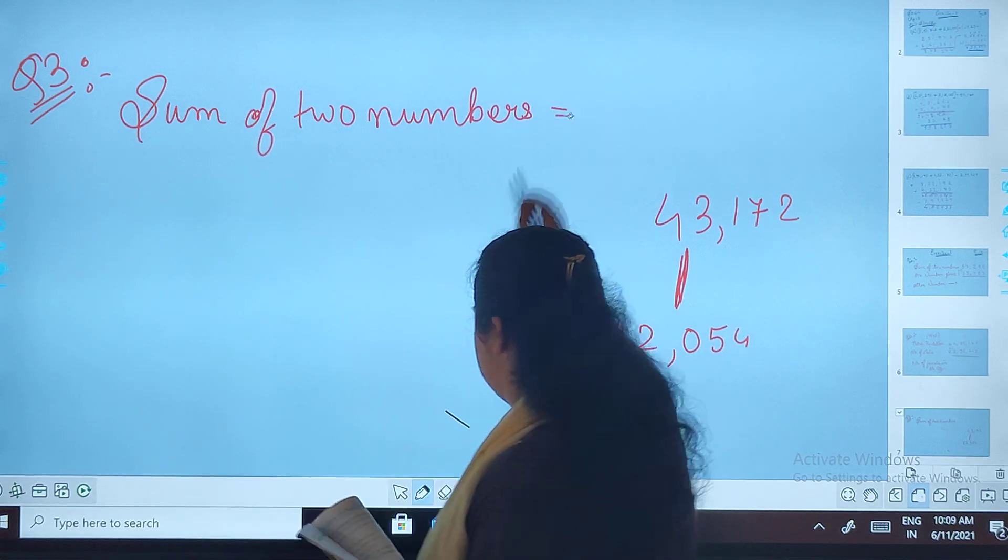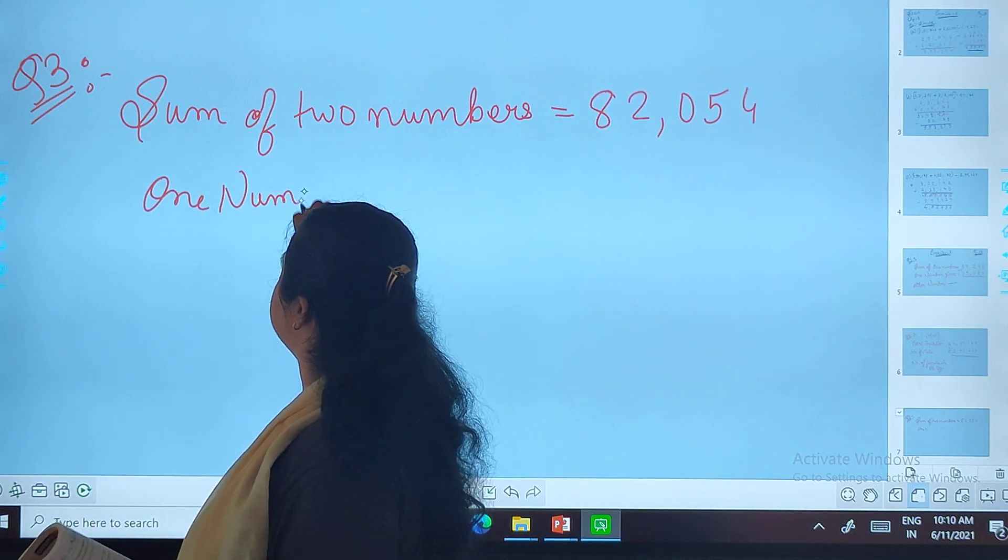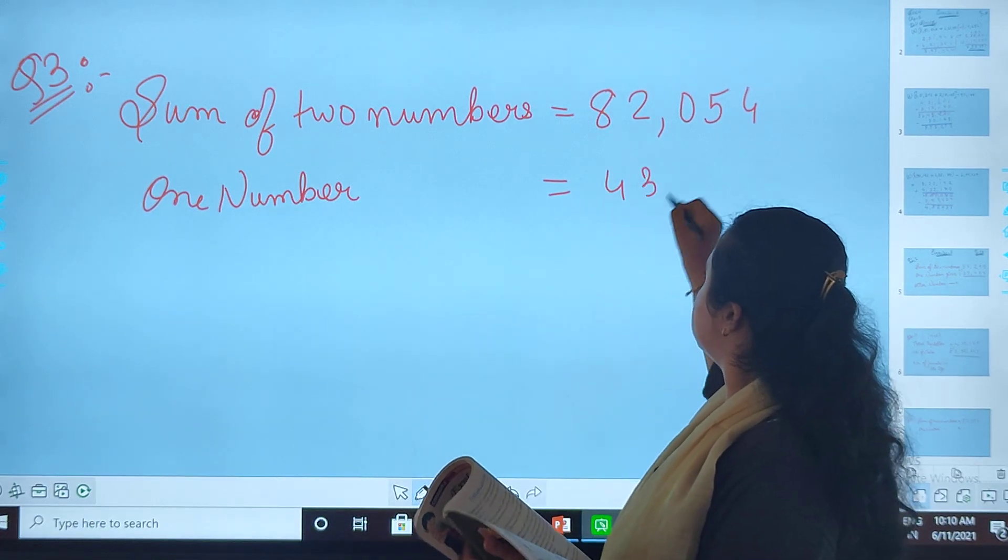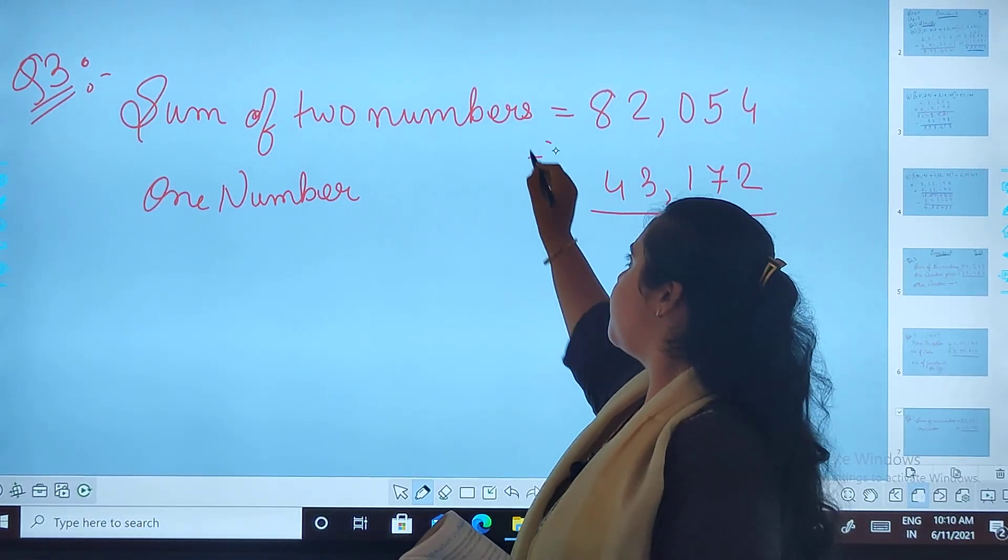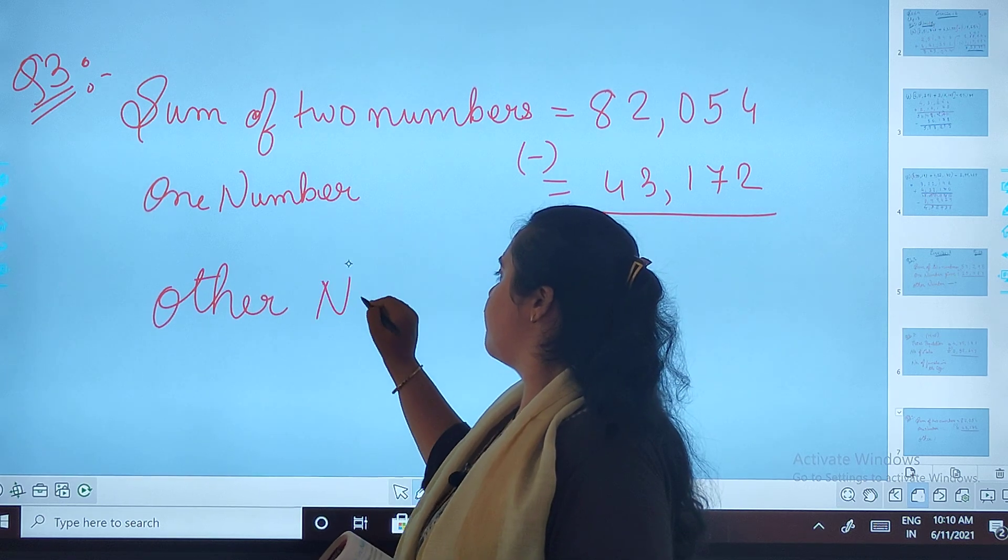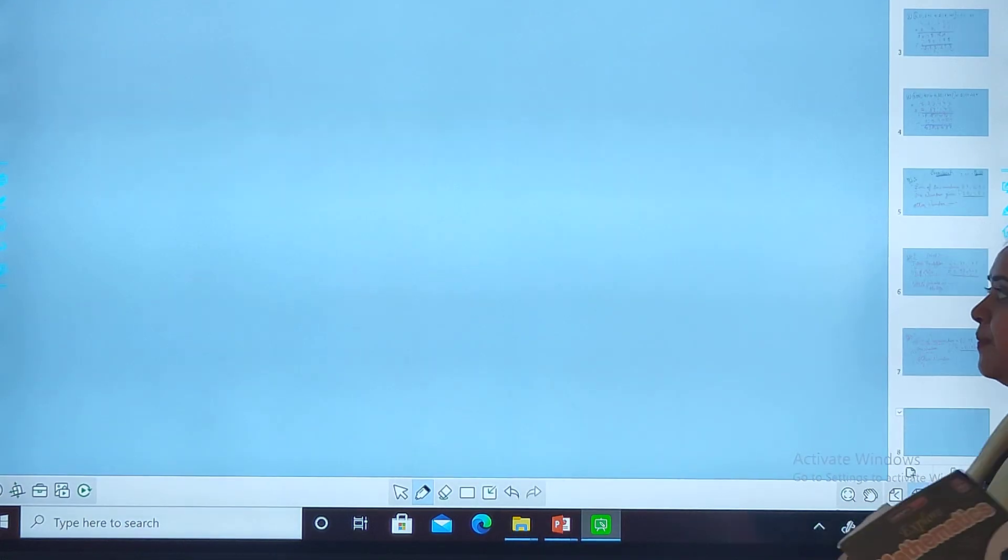Now please, the one number is given to me, that is 43,172. Now I will be doing the deduction or subtraction to find the other number. Done. Easy. Okay, let's solve the next one.